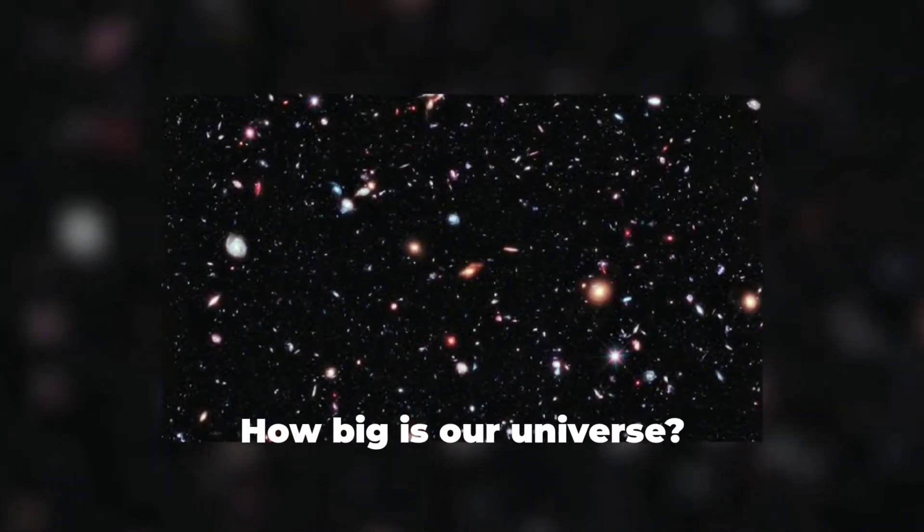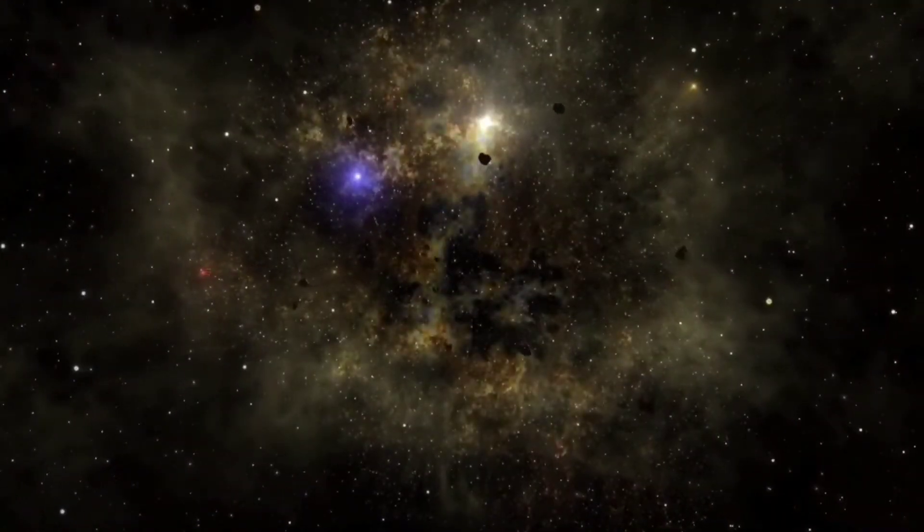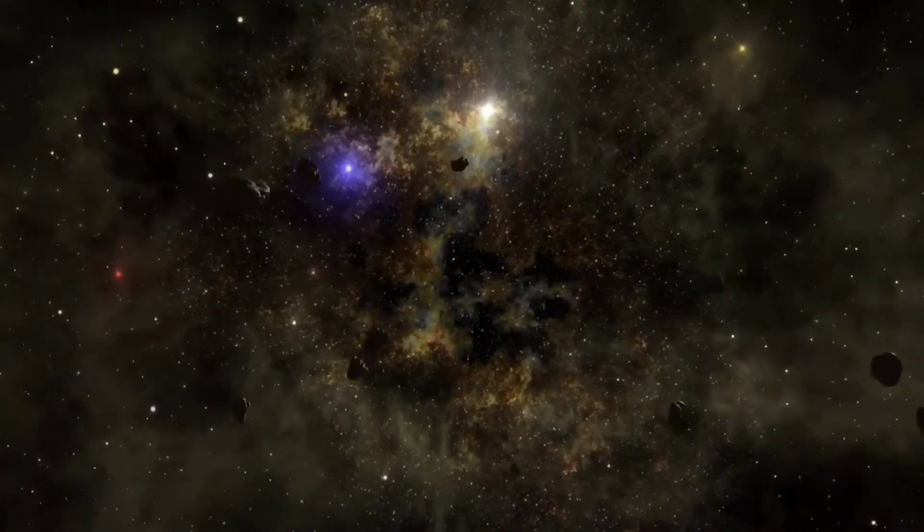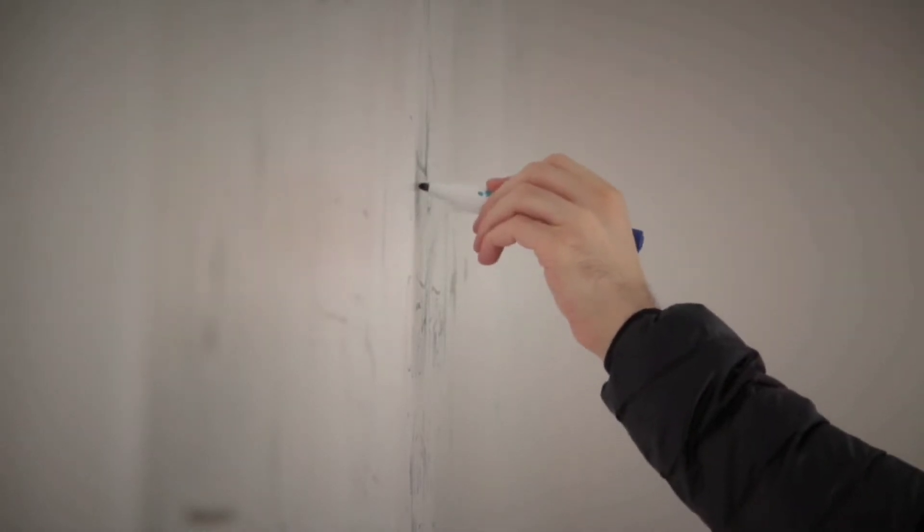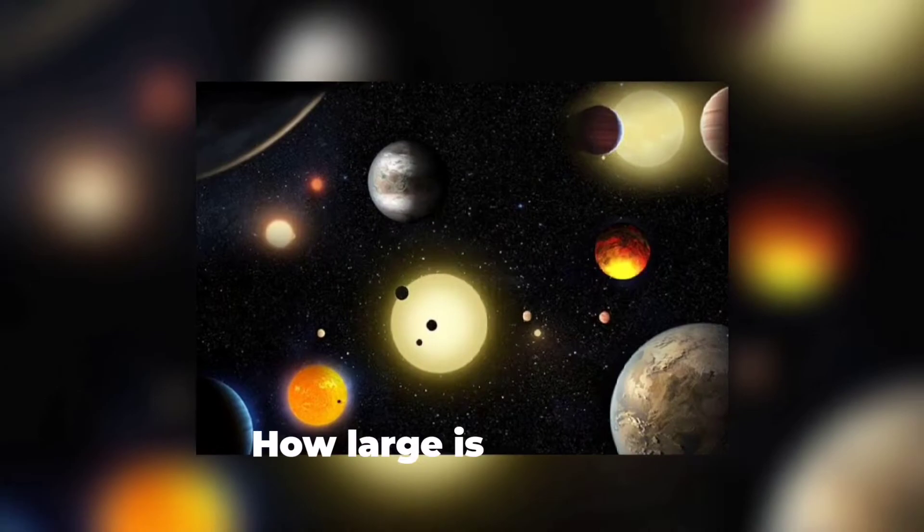How big is our universe? Scientists today believe that it is around 28.5 giga parsecs in width. I know that this number sounds enormous, but did we understand its size? I don't think so. To understand the magnitude of this number, it is first essential to understand some basic astronomical units.